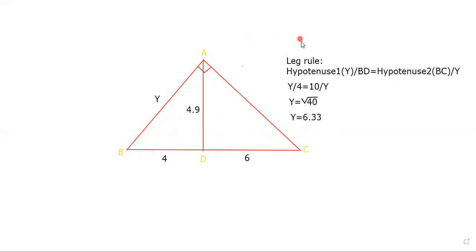When we plug it into our calculator, this rounds to 6.33. Now just to check our work, we can use the Pythagorean theorem. 4.9 squared - well, remember it was supposed to be the square root of 24 - so when we square that, that's just 24 plus 16 is 40, which is the square root of 40 squared, which is 40. So that checks out.